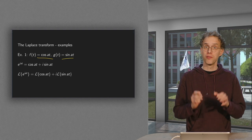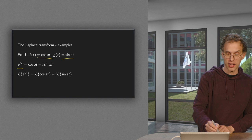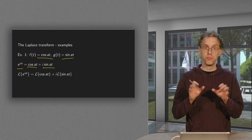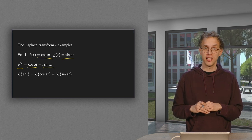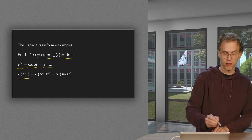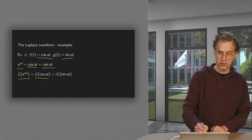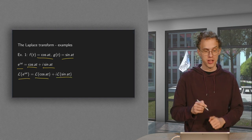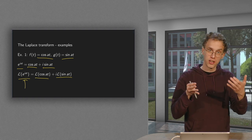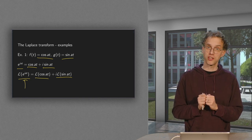We will use a trick and do both of them in one go. We use e to the power i·a·t equals cos(at) plus i times sin(at). That will help us compute both in one go and simplify the integrals. The Laplace transform of e^(iat) is the Laplace transform of cos(at) plus i times the Laplace transform of sin(at). So once we know this one, we take the real part to get the Laplace transform of cosine, and the imaginary part to get the Laplace transform of sine.